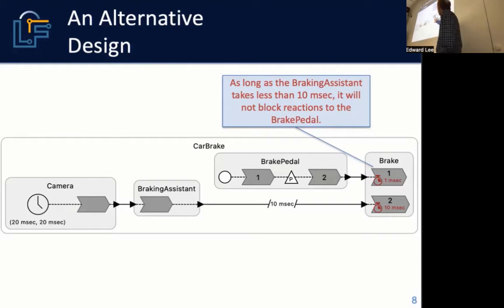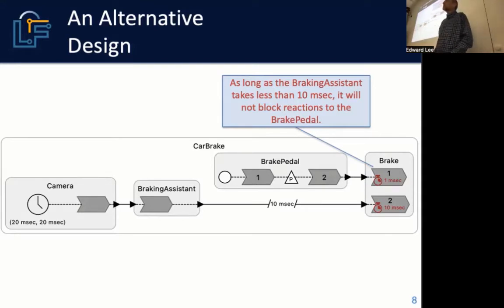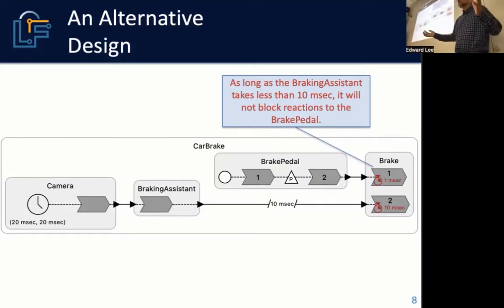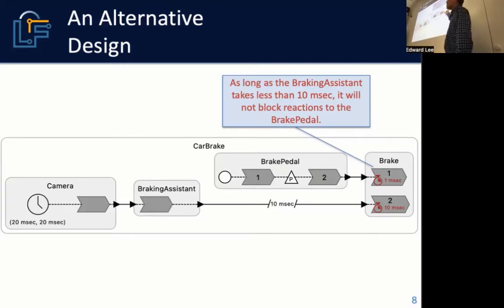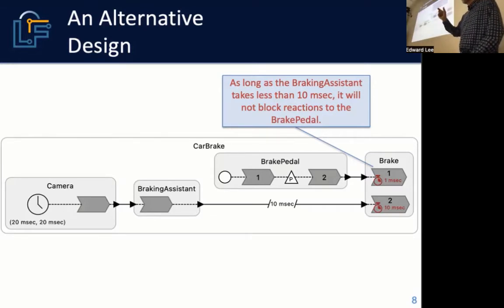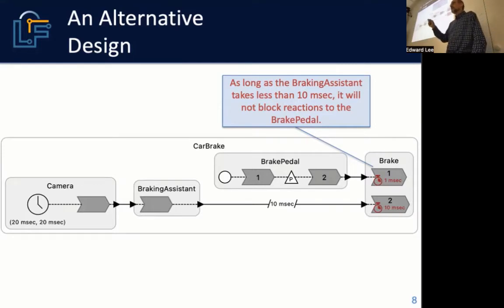Lingua Franca gives you a very nice way to explicitly put in your timing requirements. This is a specification that says the braking assistant is required to be bounded and not take more than 10 milliseconds to execute. As long as that is true, you are in fact able to meet the brake pedal deadline. This is one of the key strengths of the Lingua Franca approach — it makes these design decisions very explicit.